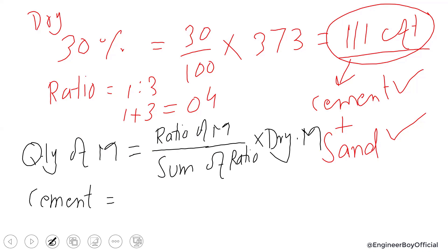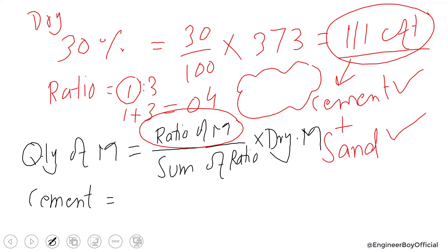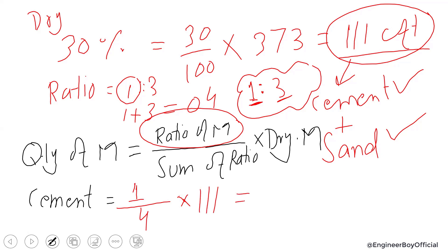The ratio of cement in a 1:3 mix is 1, meaning one part cement and three parts sand. So the quantity of cement equals the ratio of material (1) divided by the sum of ratio (4), multiplied by the dry mortar (111 cft). That gives us 111 × 1 ÷ 4, which is approximately 27 cft of cement.